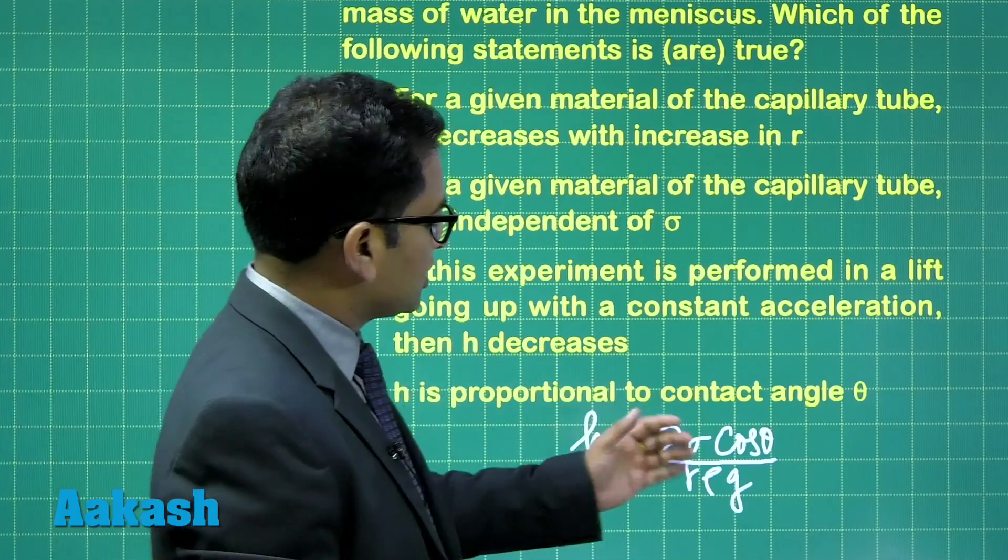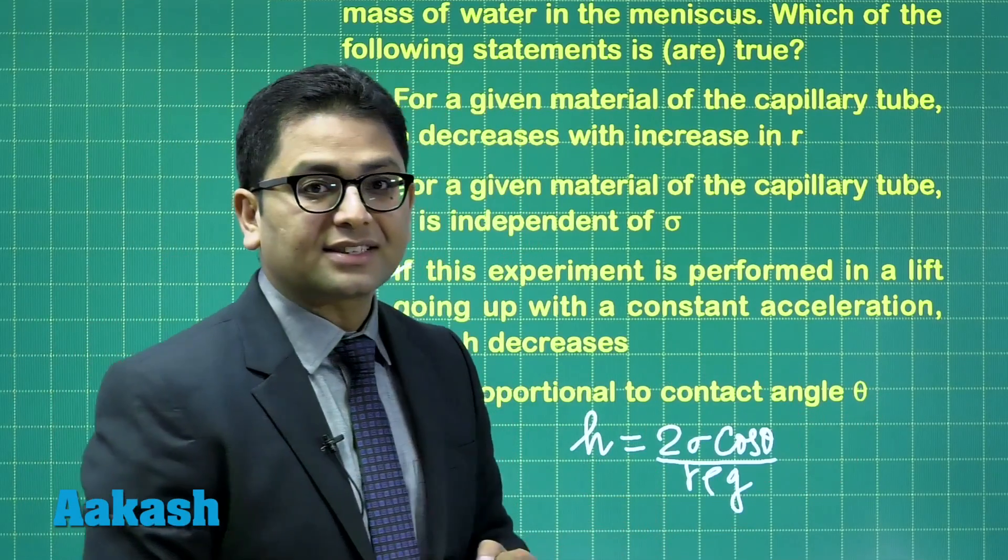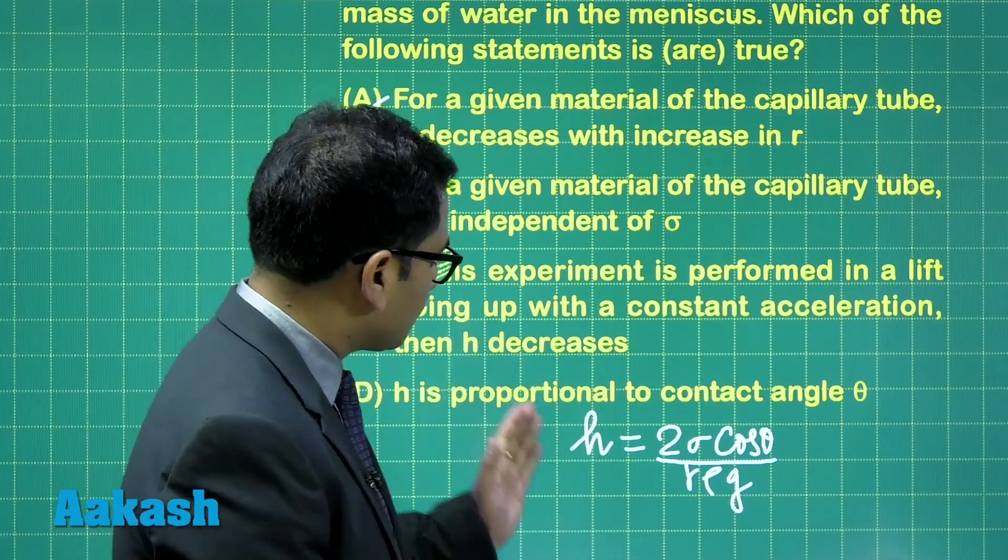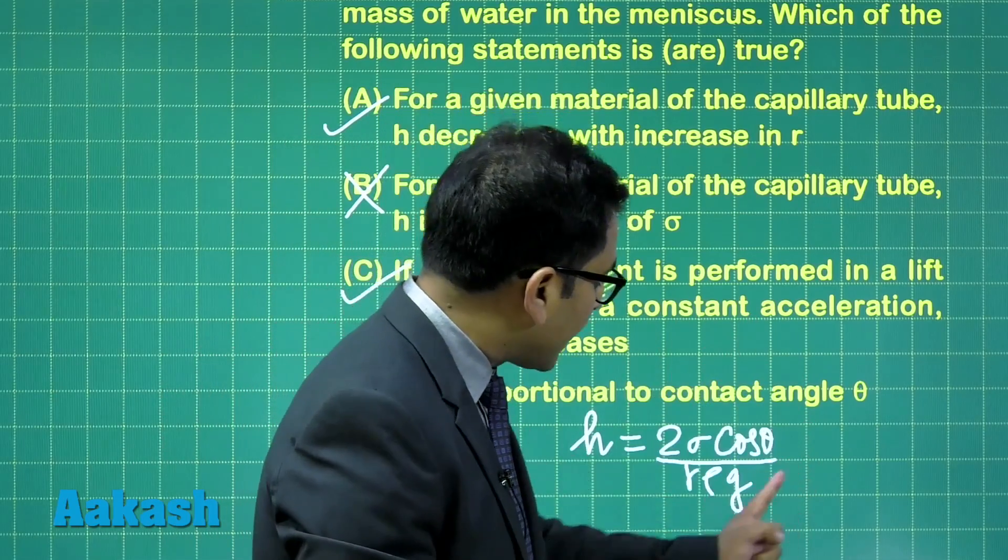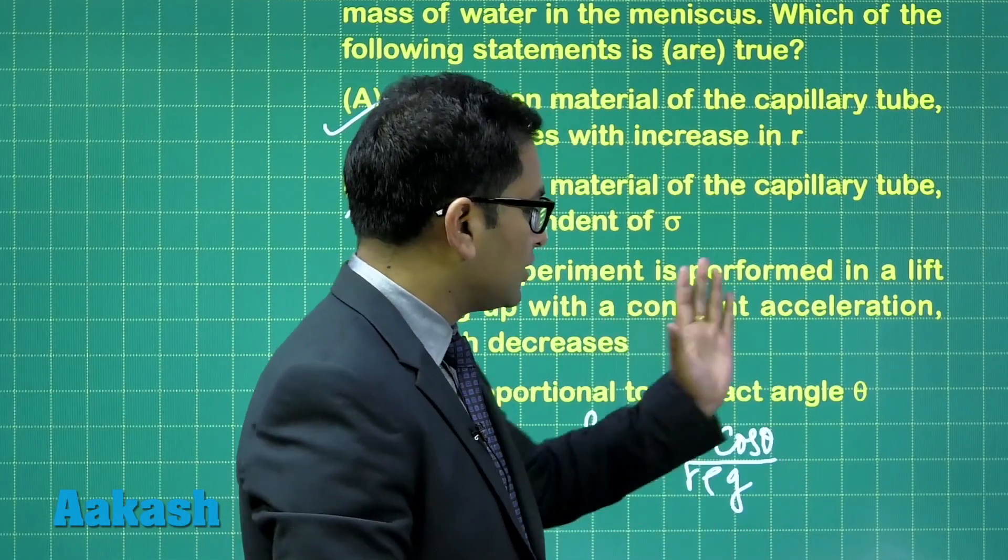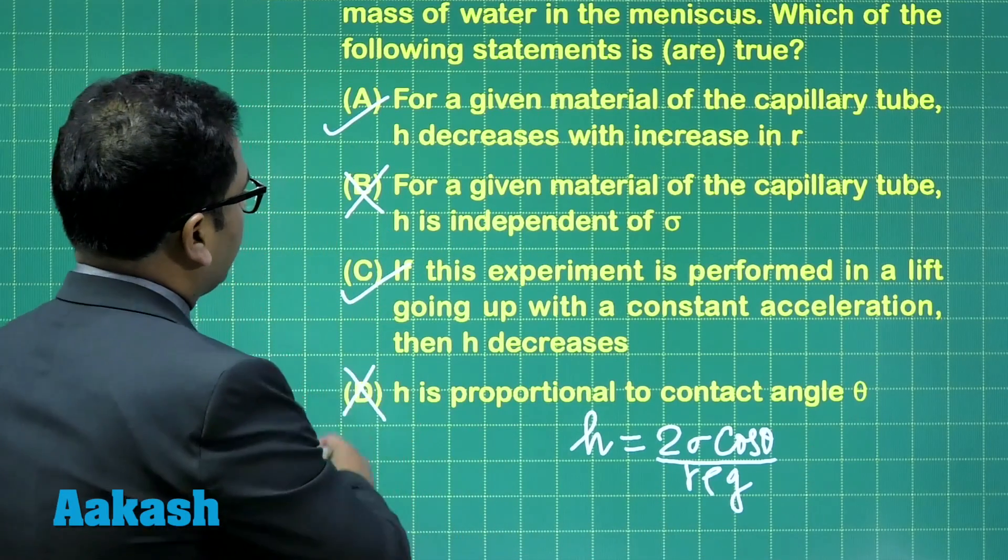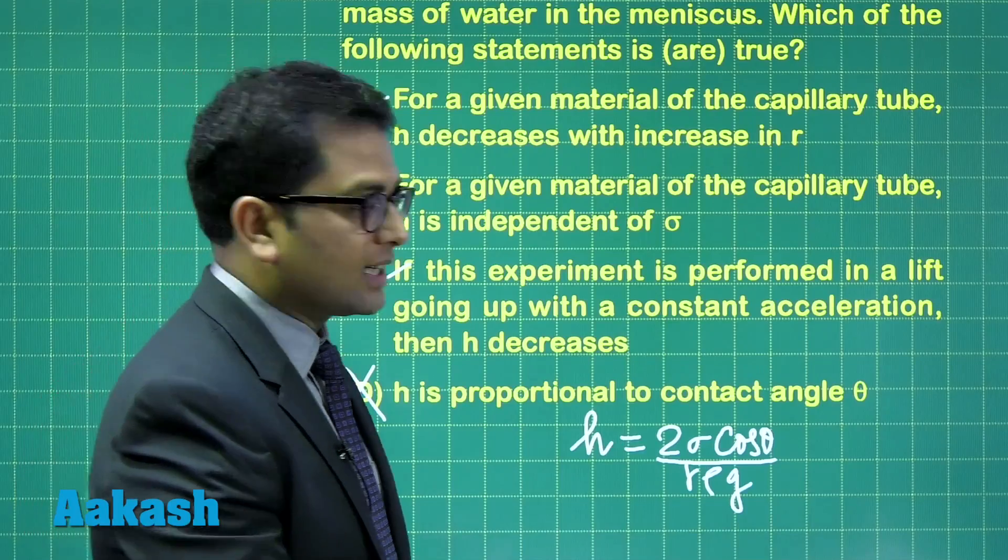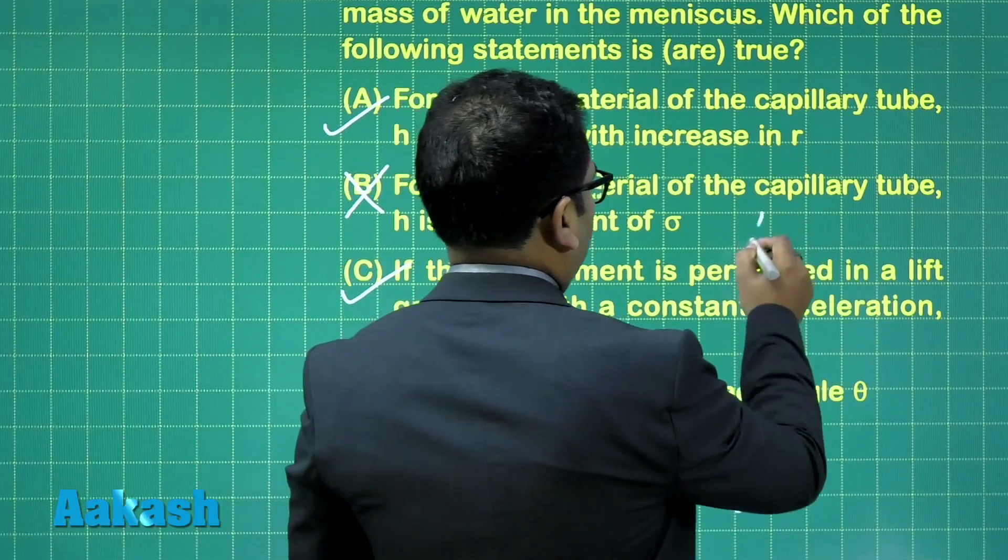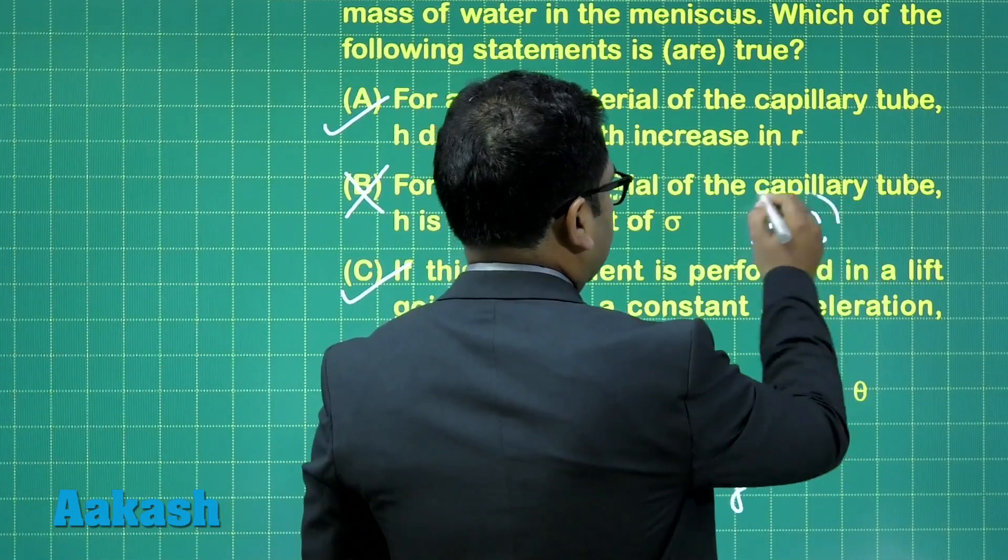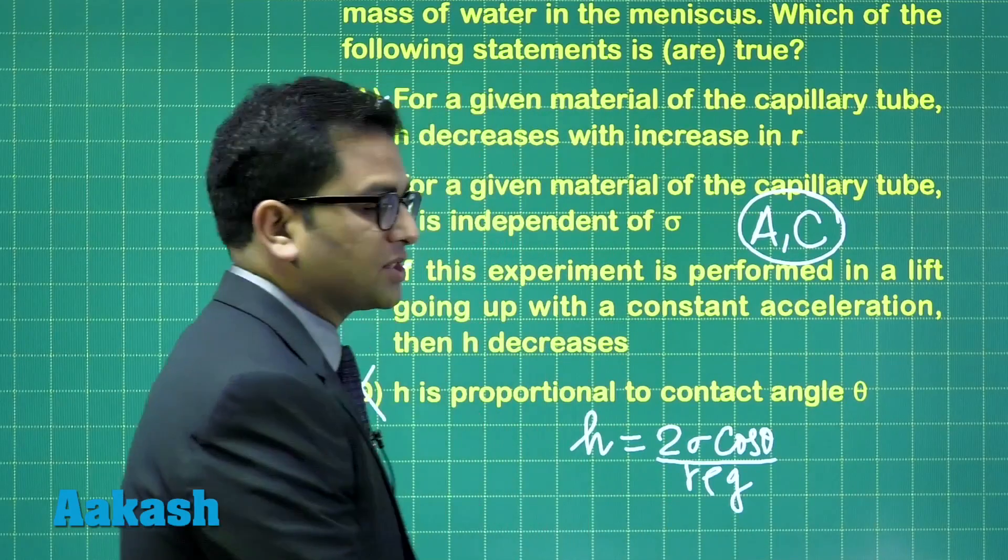Finally, option d says h is proportional to contact angle theta. That's not valid, because h is proportional to cos theta, not only to angle theta. So option d is incorrect. Therefore, for question three, the correct options are a and c.